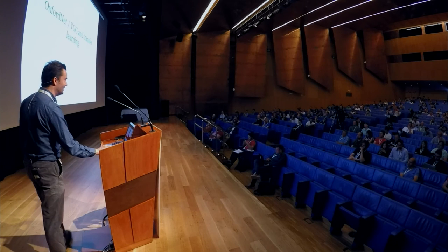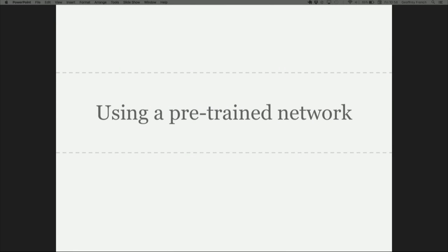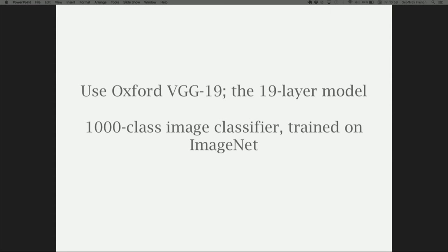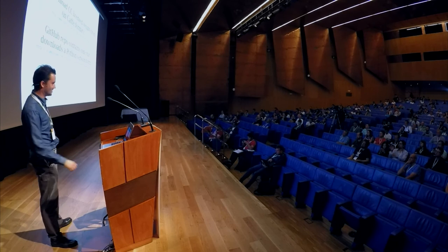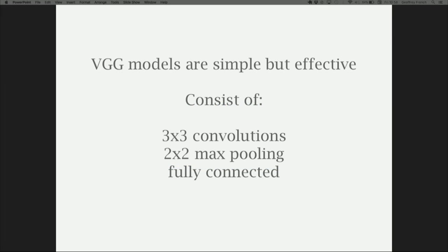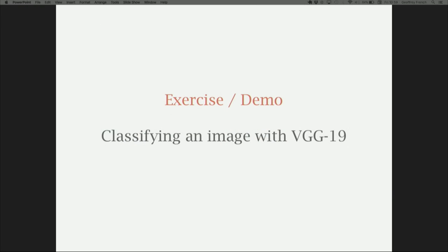Oxford Net VGGNet and transfer learning. Using a pre-trained network is often a good idea. The OxfordNet VGG-19 is a 19-layer neural network trained on the million-image ImageNet dataset. They've generously made the weights file available under Creative Commons with CC attribution — there's also a Python pickled version available. They're very simple and effective models consisting of 3×3 convolutions, max pooling, and fully connected layers. To classify an image with VGG-19, an iPython notebook is available that demonstrates this.